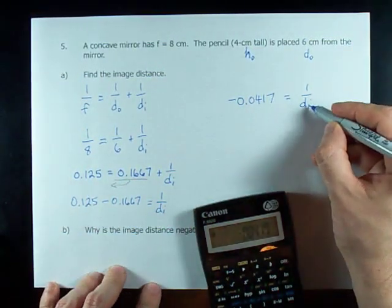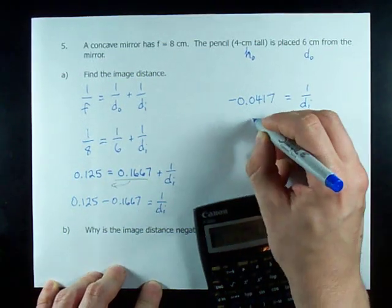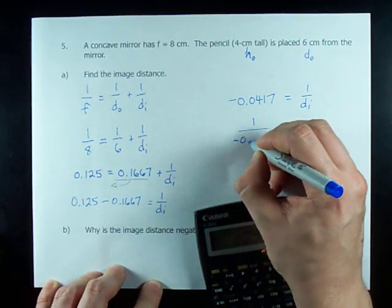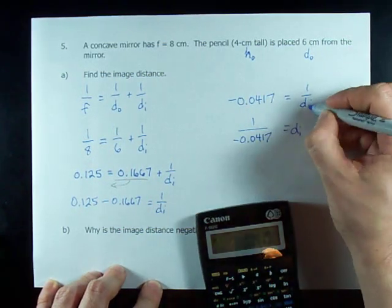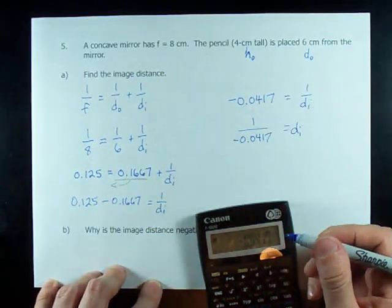And to solve for D_I, all I have to do is do 1 over that other side. Remember, that's how you undo 1 over on this side. You do 1 over on that side.